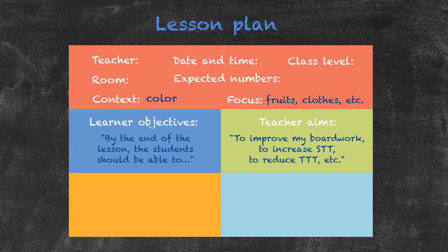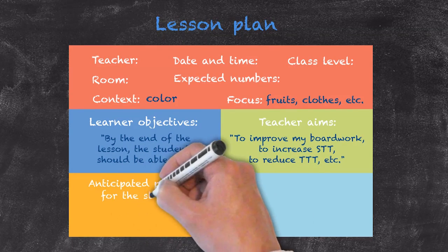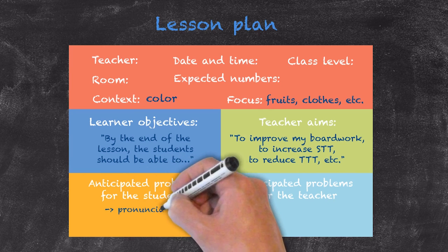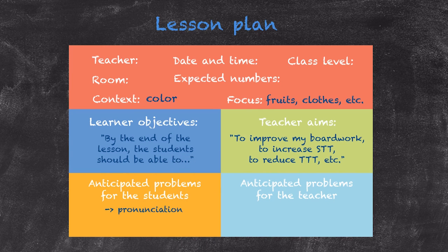The next section relates to what we might call anticipated problems — for both our students and for ourselves. The types of problems we may anticipate from students include difficulties with pronunciation or difficulties with the level of the grammar and putting it into context. Anticipated problems for the teacher might include making sure we stick to the plan and that the focus of the lesson is maintained throughout.